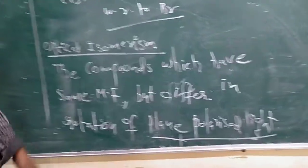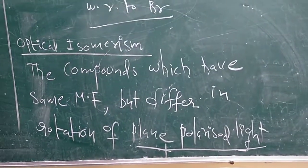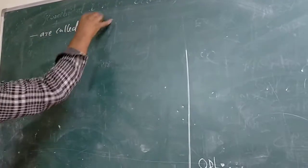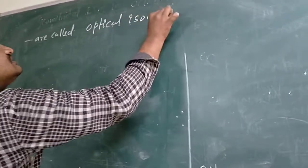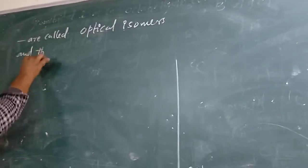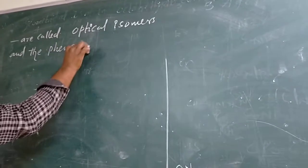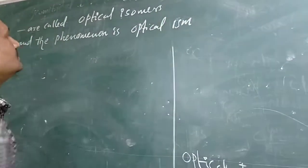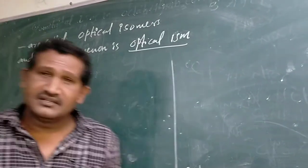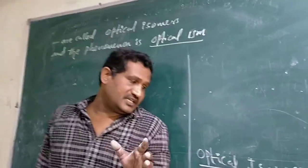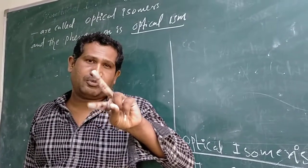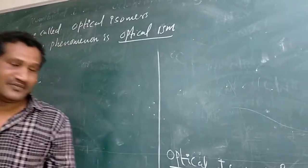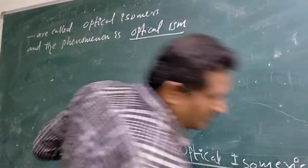Compounds which have the same molecular formula but differ in the rotation of plane polarized light are called optical isomers. The phenomenon is called optical isomerism. These are compounds which can rotate plane polarized light.